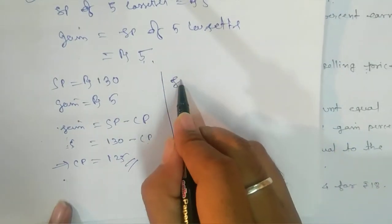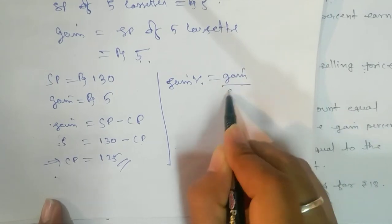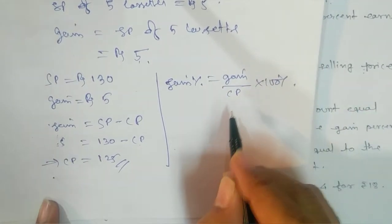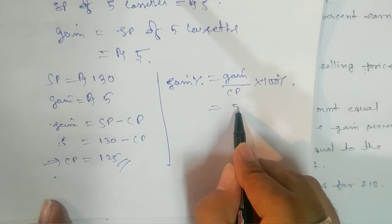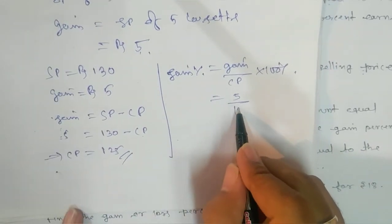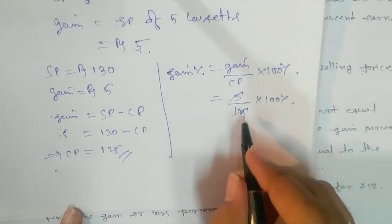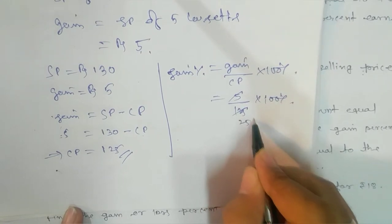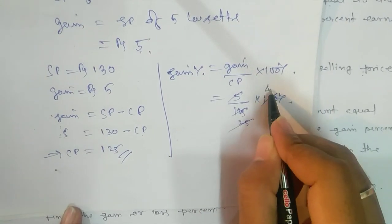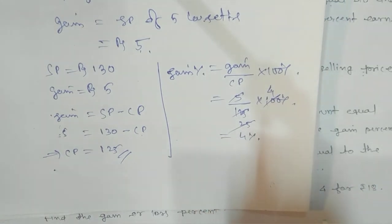Now we find gain percent: Gain% = (Gain / CP) × 100% = (5 / 125) × 100% = 4%. So the gain is 4%.